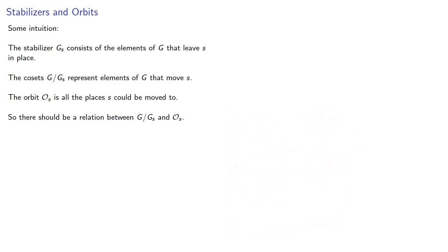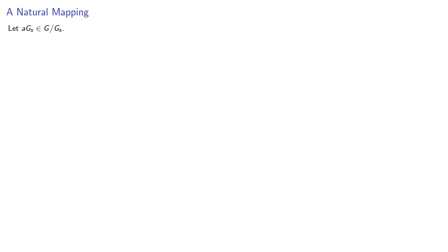And so the question to ask is, is there a useful function that maps the set of cosets to the orbit? And the answer is yes. And in fact, there's a very natural mapping. Let's consider one of our cosets. Then Phi applied to our coset equals as, that's the representative of the coset, defines a mapping from the set of cosets into the orbit.